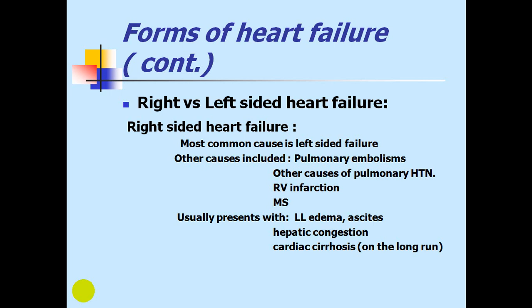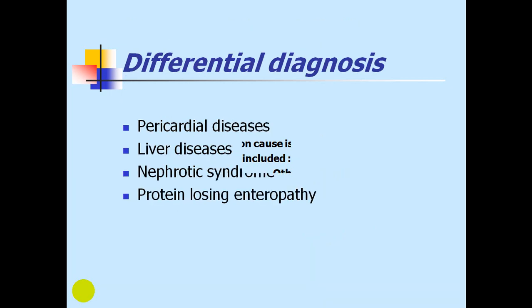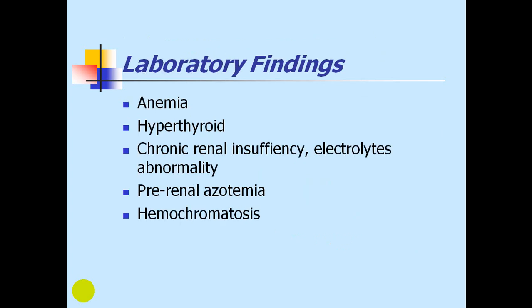Right-sided heart failure typically presents with congestion: lower limb edema, ascites, pleural effusion, hepatic congestion, and in long-standing cases, cardiac cirrhosis. The differential diagnosis of right-sided heart failure includes pericardial disease, liver disease, nephrotic syndrome, renal failure, and protein-losing enteropathy.